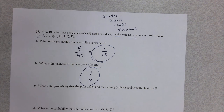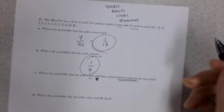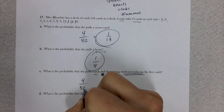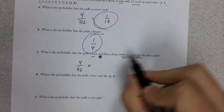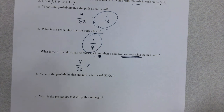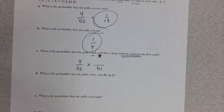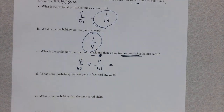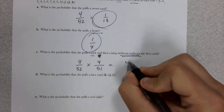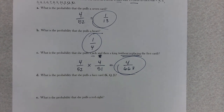What's the probability she pulls a jack and then a king without replacing? First, the chance of a jack is 4 out of 52. Since she doesn't replace it, the deck now only has 51 cards. There are still 4 kings, so we multiply: 4 out of 52 times 4 out of 51. That gives us 4 out of 663 — a very low chance.